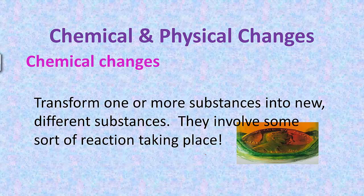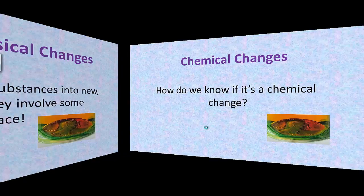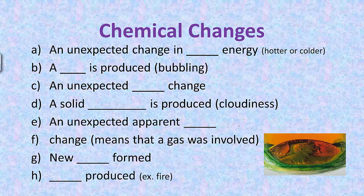Chemical changes transform one or more substances into new, different substances — they involve some sort of reaction taking place. Here are some indicators of chemical changes: an unexpected change in heat energy, if it gets hot or cold; a gas is produced, so if you see bubbles; an unexpected color change — for example, if you added a penny into some acid and it started to turn green.